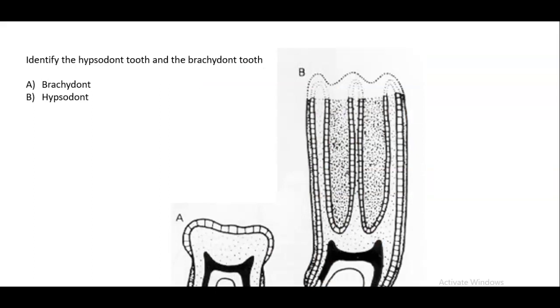Identify the hypsodont tooth and the brachydont tooth. A, the shorter profiled tooth is the brachydont. And B, the longer tooth that has continuous growth is the hypsodont.